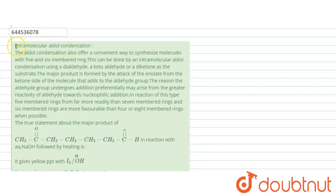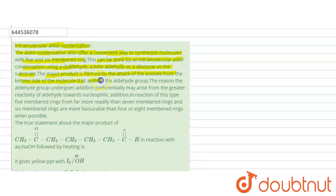In this question, it is given about intramolecular aldol condensation. The aldol condensation also offers a convenient way to synthesize molecules with five and six membered rings. This can be done by an intramolecular aldol condensation using a dihalide, a ketohalide, or a diketone as a substrate. The major product is formed by the attack of the enolate from the ketone side of the molecule that adds to the aldehyde group.